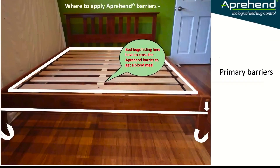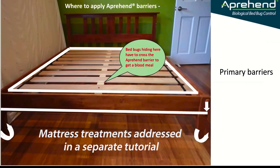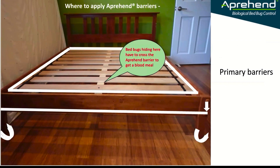Here's how to apply. We're going to remove the mattress because Apprehend is not labeled for mattresses, but we're going to treat everything else. In this case we have a bed without a box spring — just a simple bed frame. We're going to apply Apprehend barriers everywhere where you see one of these white lines. We can go around the legs of the bed so that any bed bugs approaching the bed from the outside have to cross a barrier if they climb up the legs.